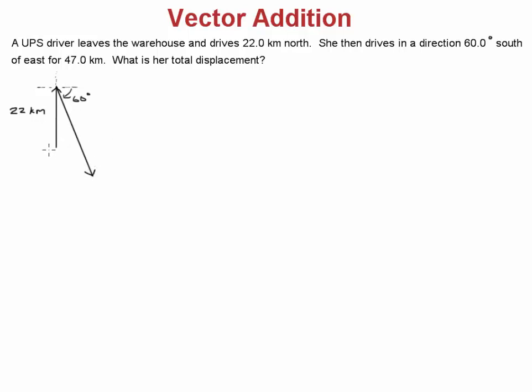Now we have two displacement vectors. The total displacement is actually a vector that connects where she started to where she ended. So the third vector, which is the one we want to know about, is the one that starts here. That is our final displacement that we're looking for. This one was 47 kilometers. Now what we need to do is we're going to have to find the components of the two vectors that we have and use them to find the components of this.